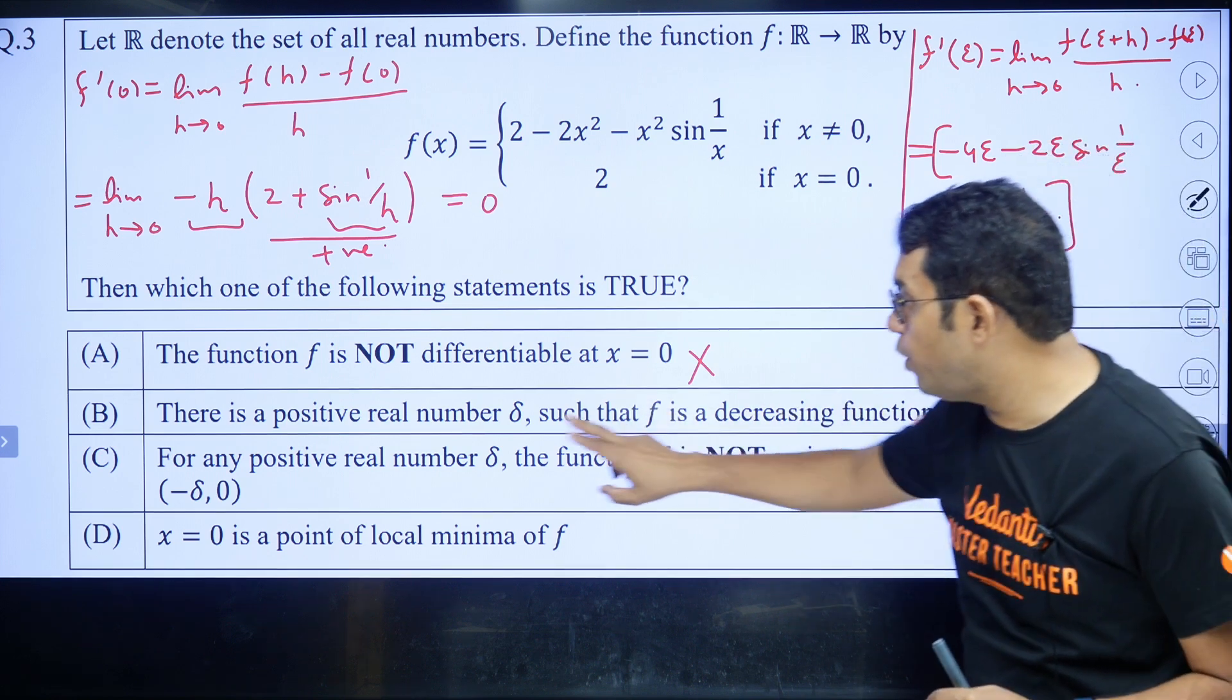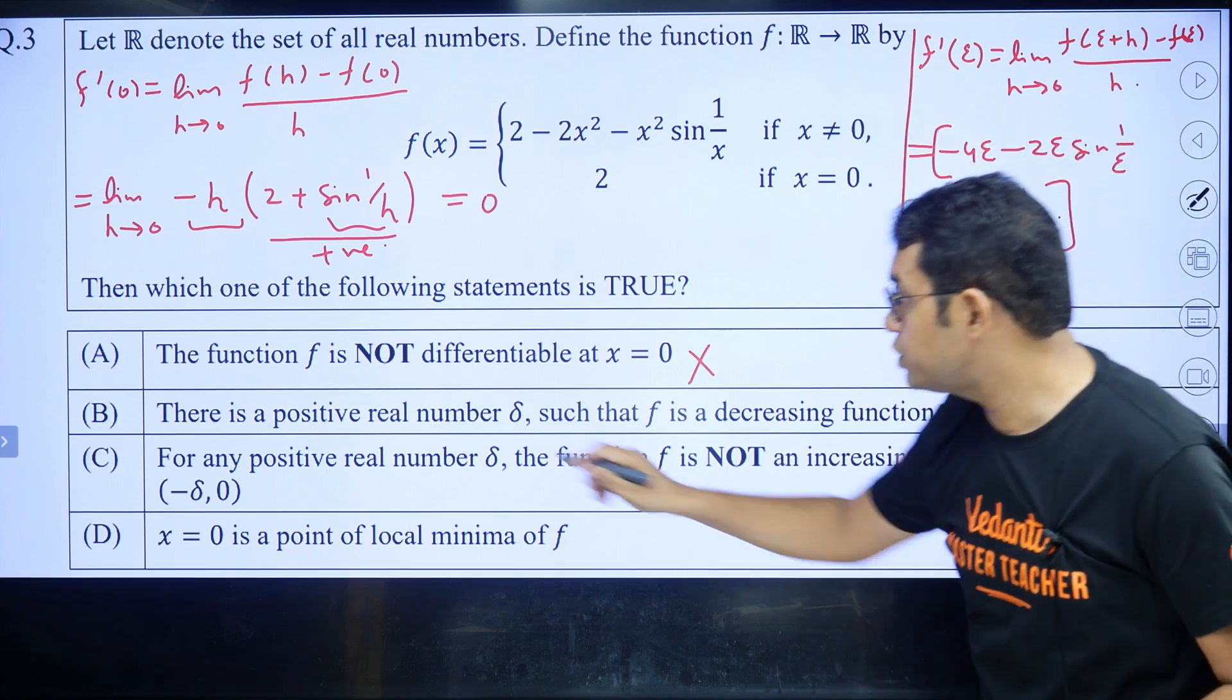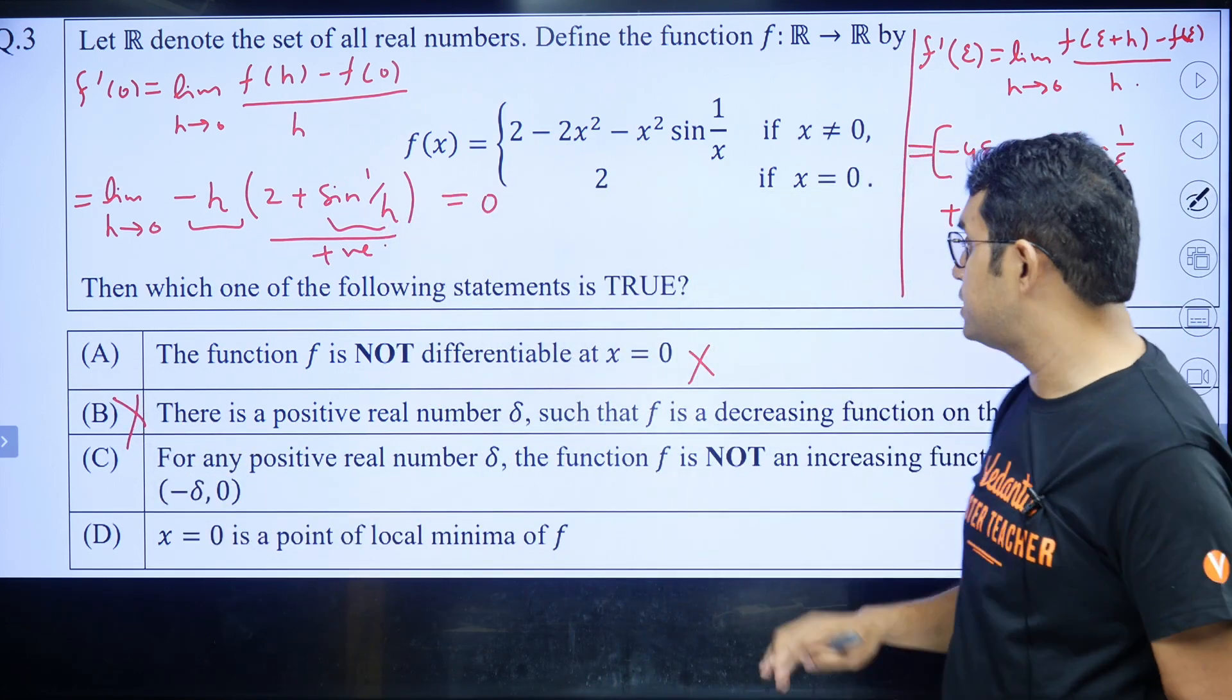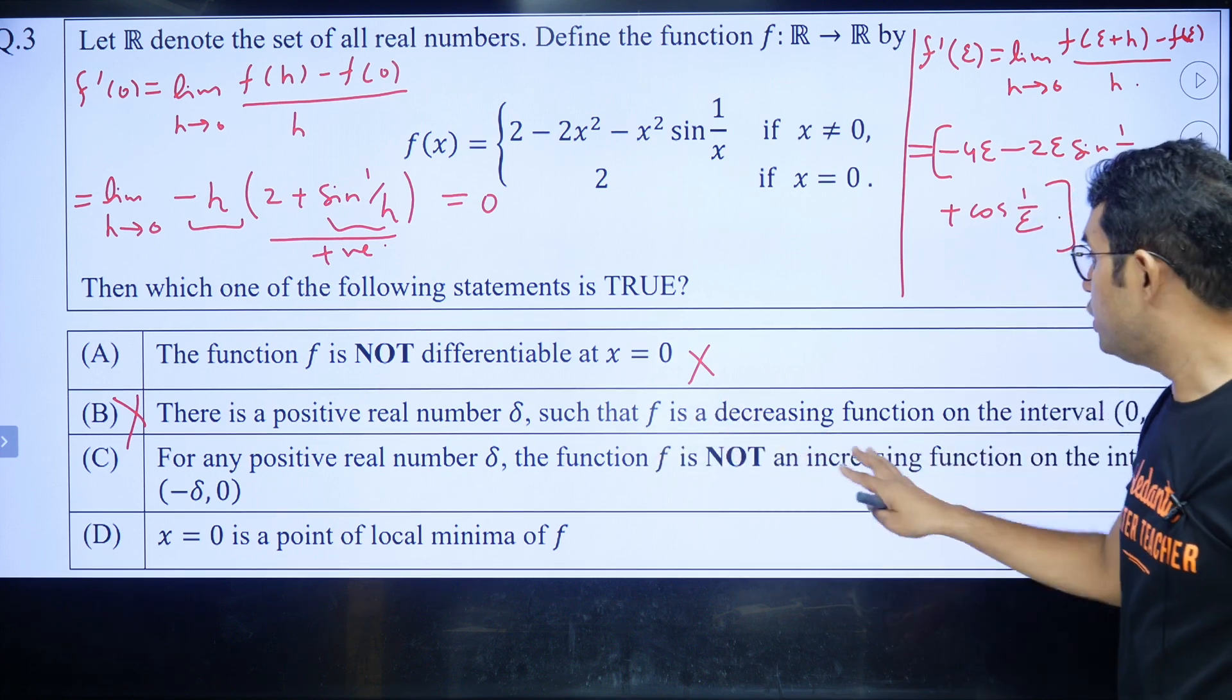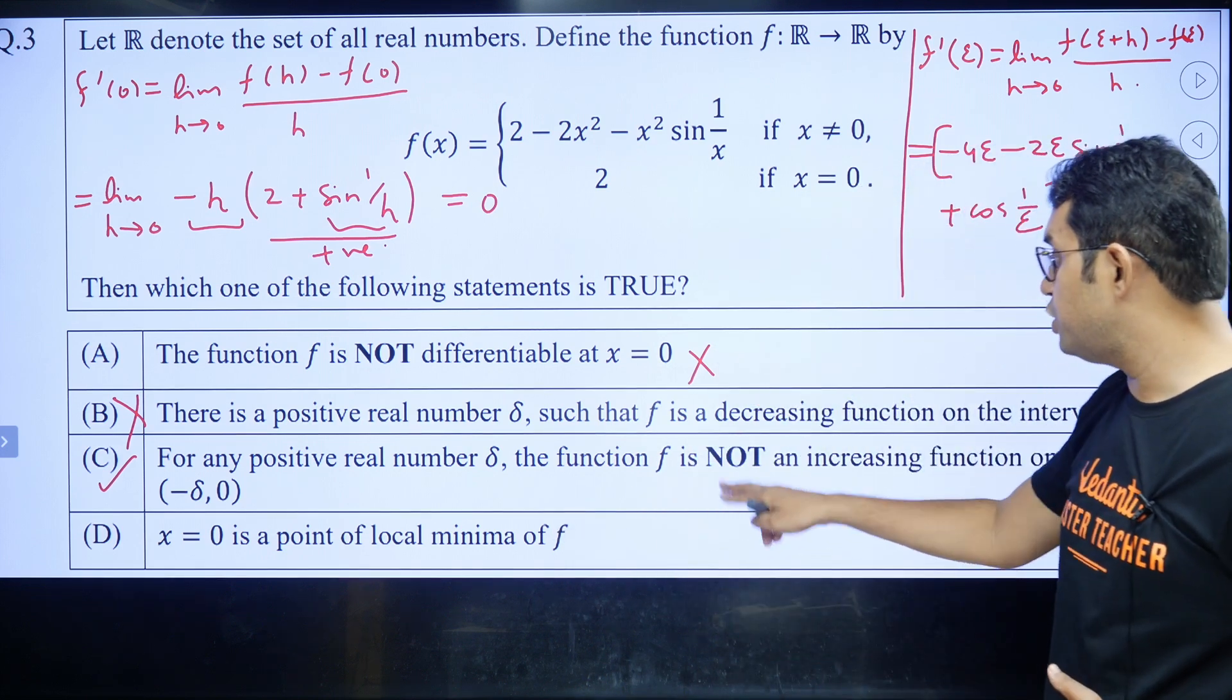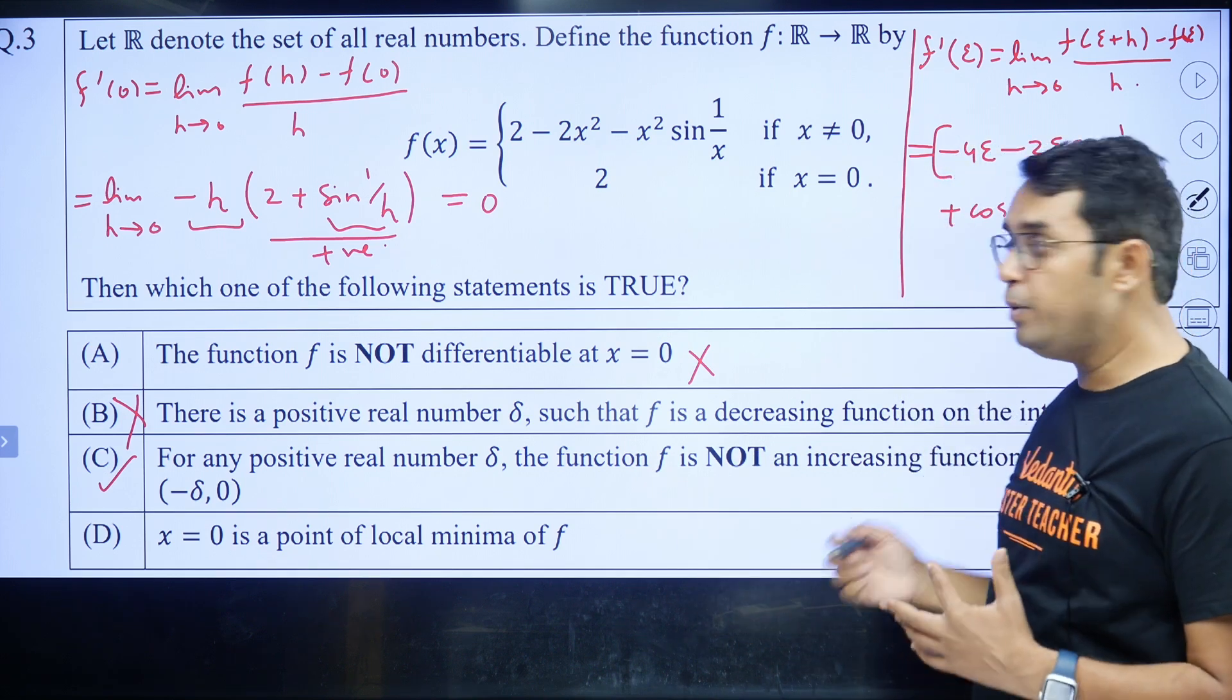So whatever small number you choose, you cannot claim this f dash will be always positive or always negative. So saying that this function is decreasing on the interval 0 to infinite is wrong. In fact, on both sides, whether on 0 to delta or minus delta to 0, you cannot say it will be decreasing or increasing. That's why option C is correct. For any positive real number delta, the function is not an increasing function. It is actually neither increasing nor decreasing. It will be oscillating. This derivative value will be oscillating.